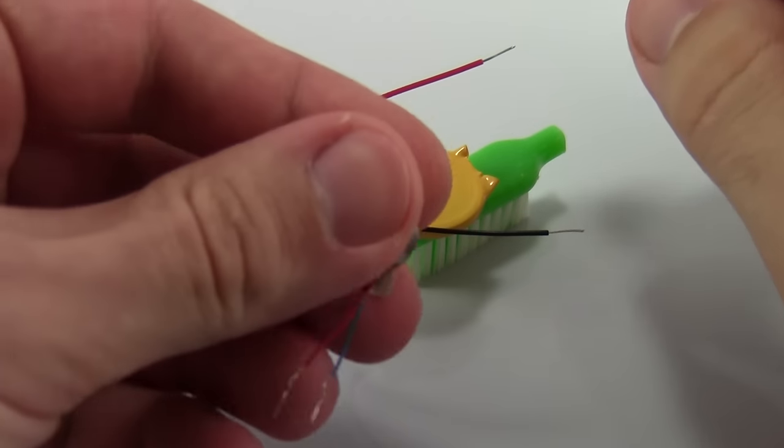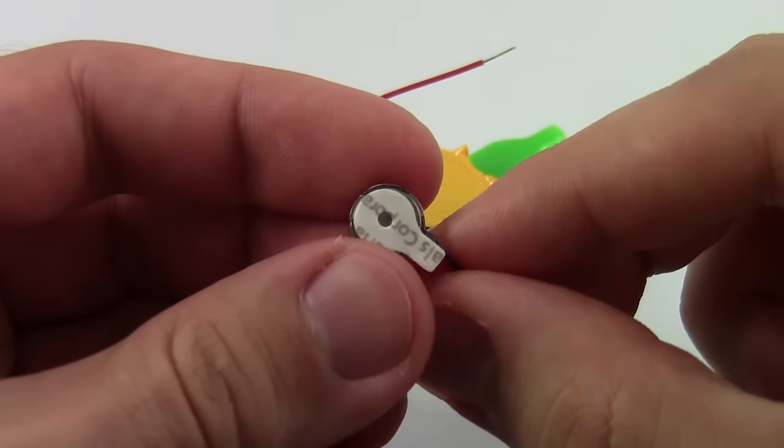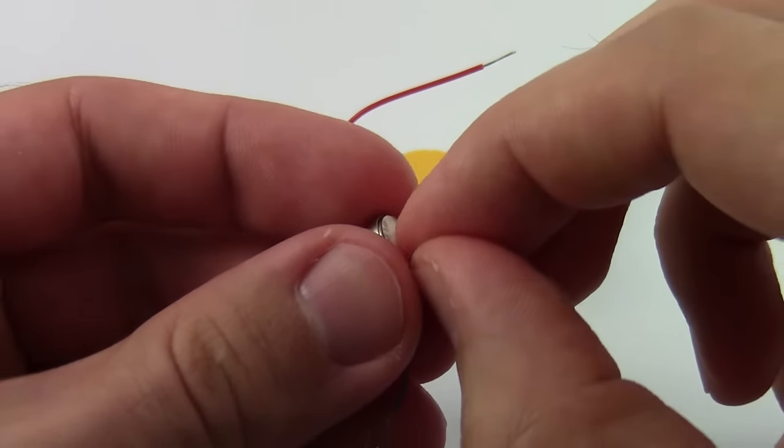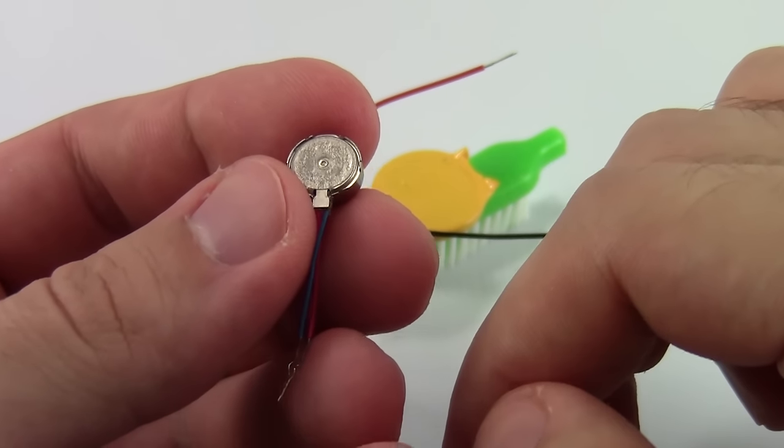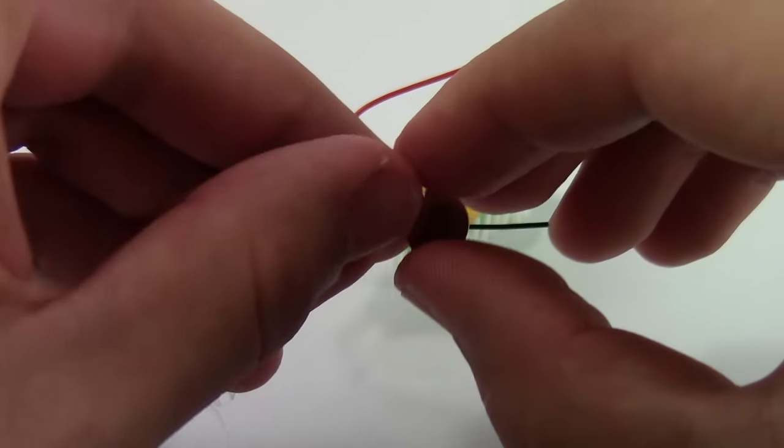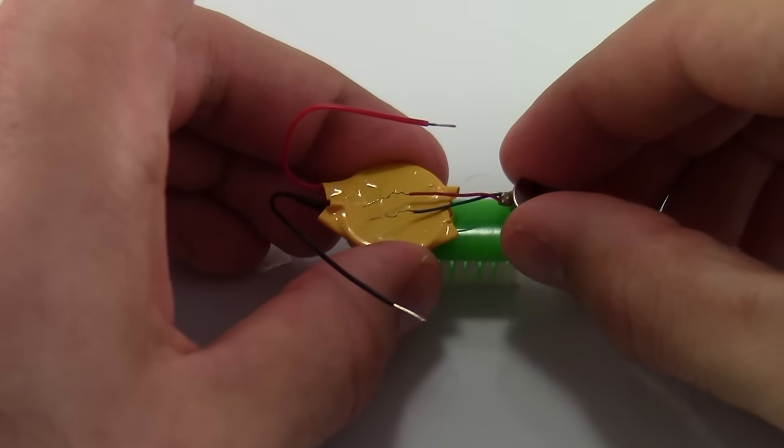Now, take the vibration motor, flip it over, and peel off the paper backing on the bottom. The motor has a built-in sticky adhesive so you don't need a piece of tape for it. You can place it directly on top of the toothbrush behind the battery.